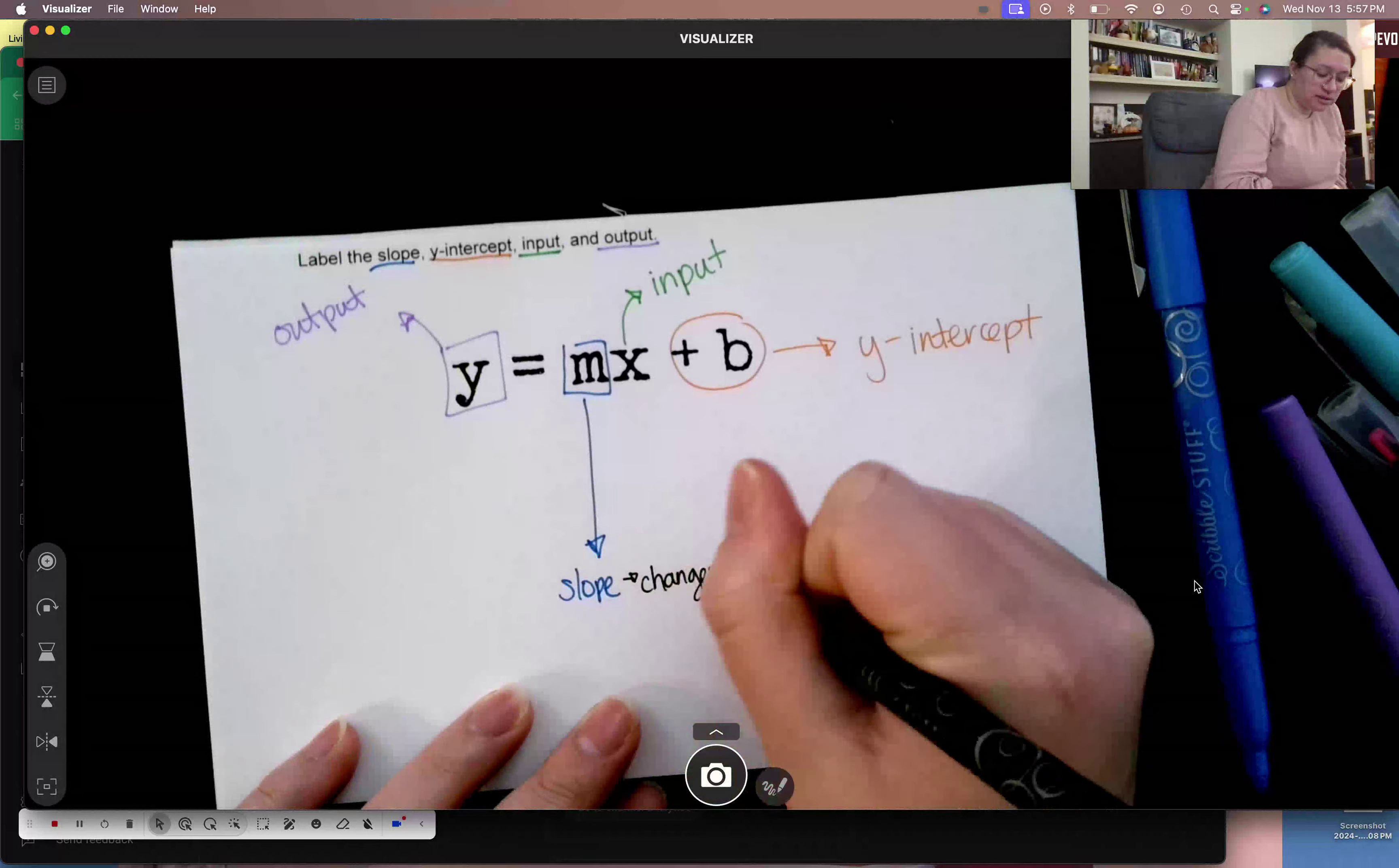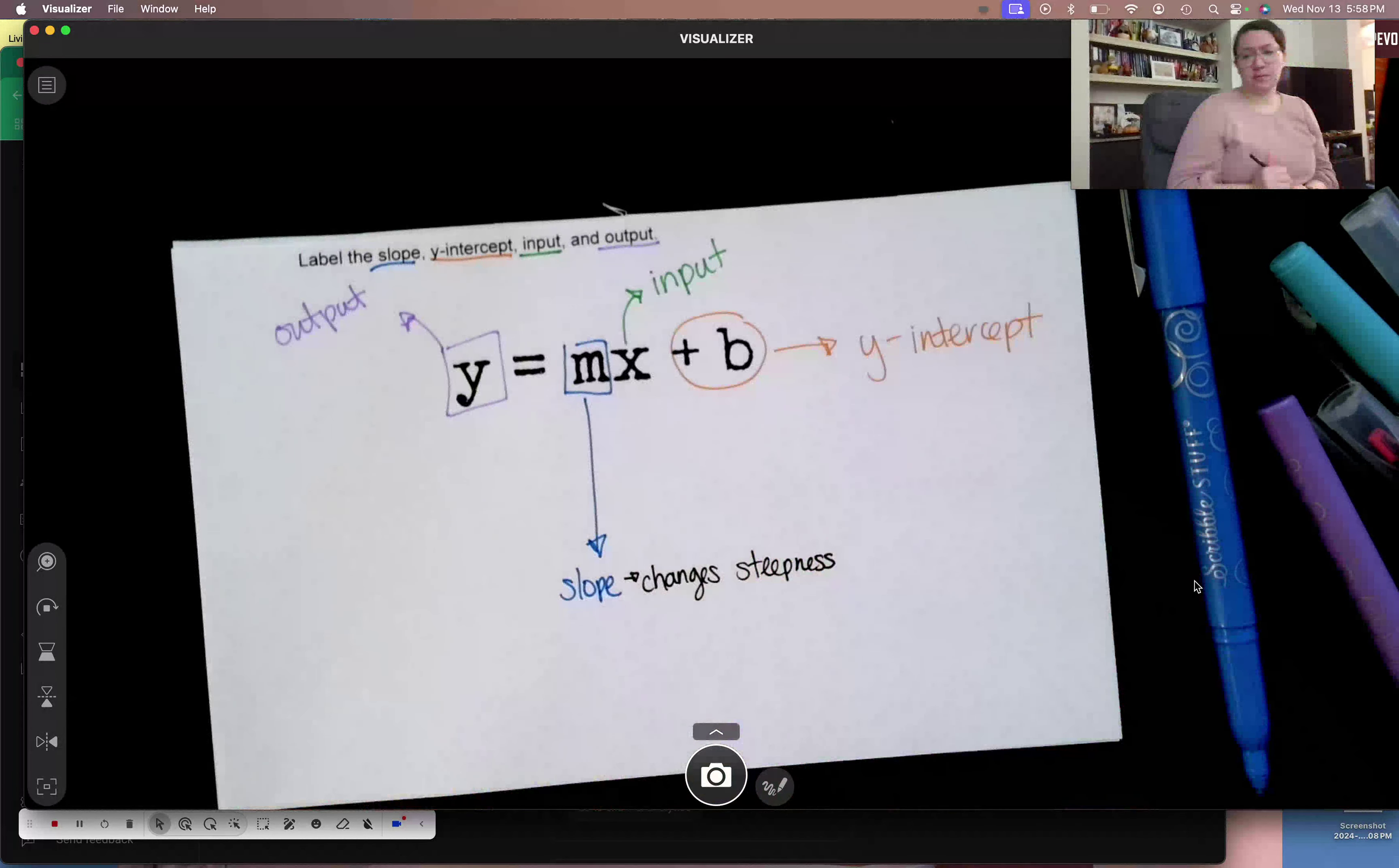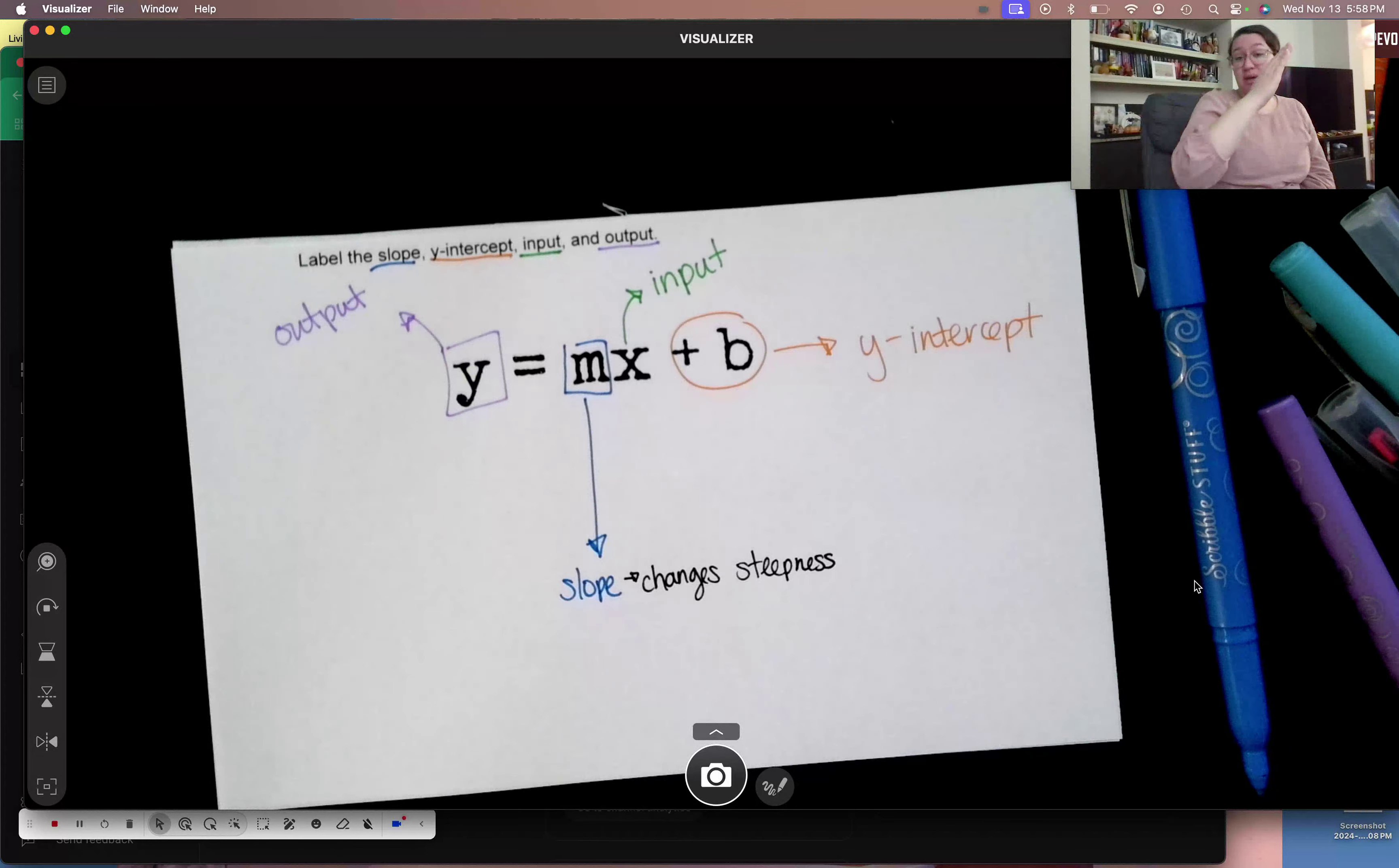Your slope changes the steepness of your graph. So flat is not steep at all. This is a little steep, little steeper. The closer you get to vertical, the steeper it is. So your slope changes how steep and in what direction your line is.